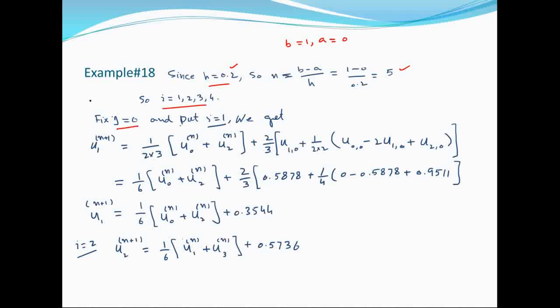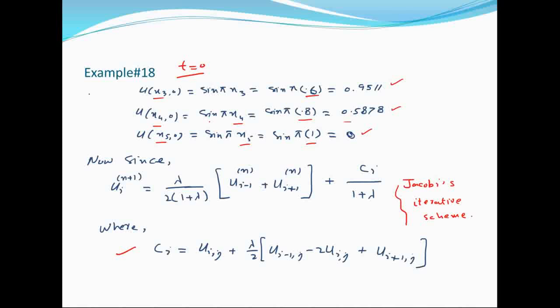j=0 और i=1 रखते हैं। Different i values (1, 2, 3, 4) put करेंगे। j=0 के लिए equation में left-hand side पर level j+1 आएगा और right-hand side पर level j होगा।